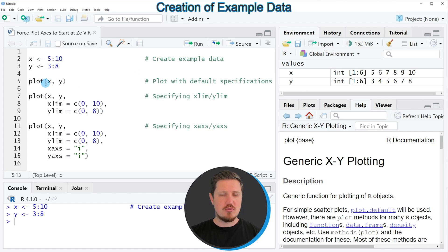Now let's assume that we want to draw a scatterplot of these data using the basic installation of the R programming language. Then we can apply the plot function as you can see in line 5 of the code.